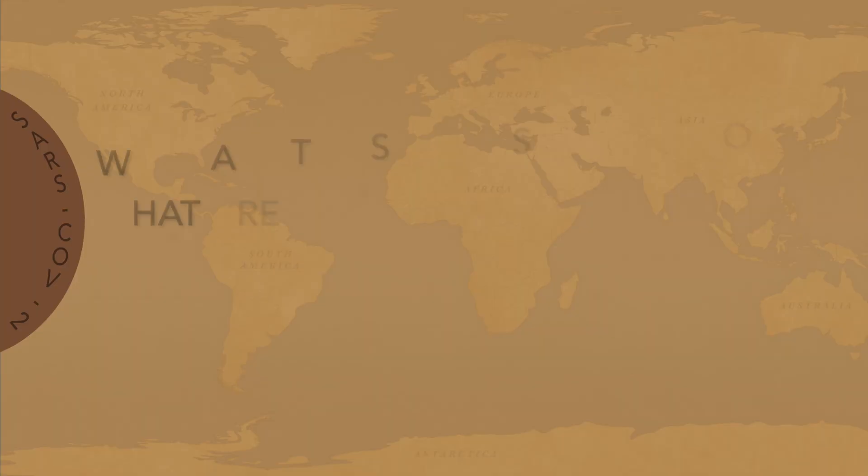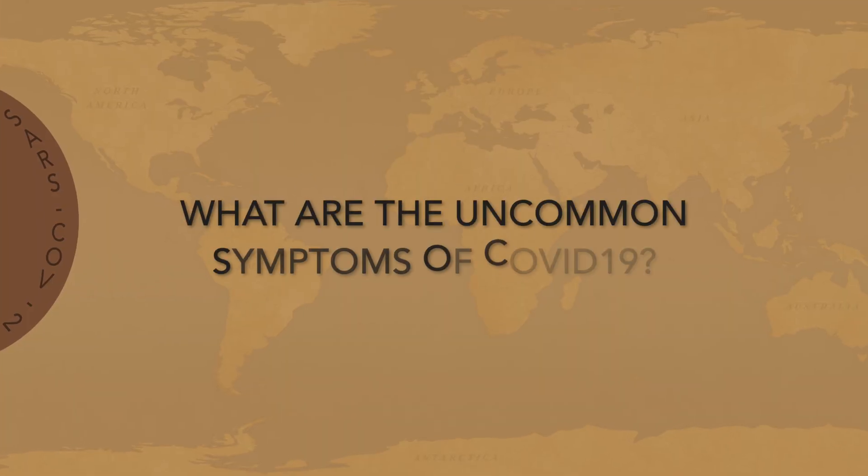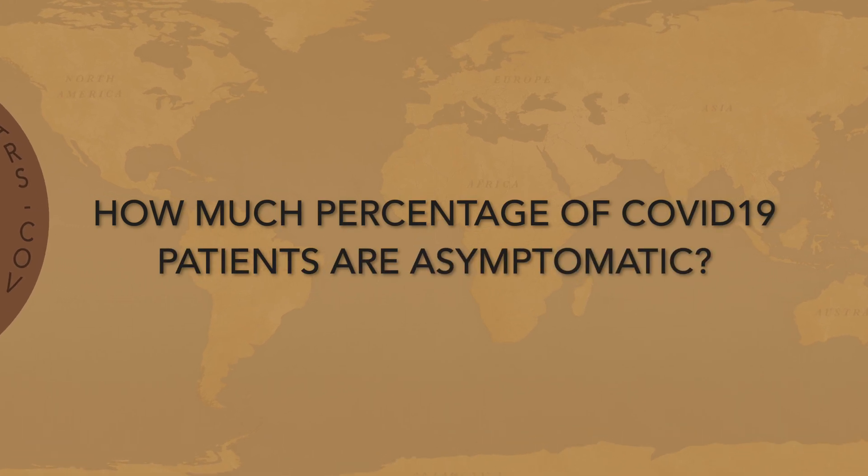Some people infected with COVID-19 might not experience any symptoms, while others can expect symptoms similar to regular pneumonia, like shortness of breath, fever, and cough. Signs and symptoms like bluish face, difficulty walking or breathing, and continuous chest pain might indicate severe disease, and such patients are advised to see a doctor immediately. Uncommon symptoms include anosmia (loss of smell), hemoptysis (coughing of blood), vomiting, and diarrhea. About 20 to 50 percent of COVID-19 patients are asymptomatic.